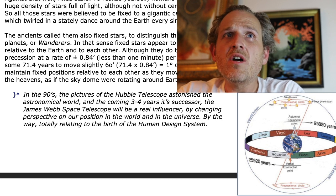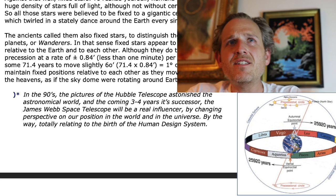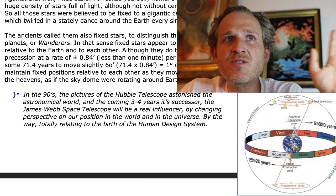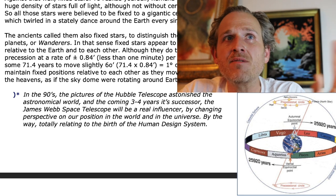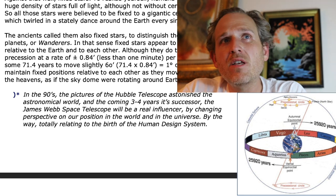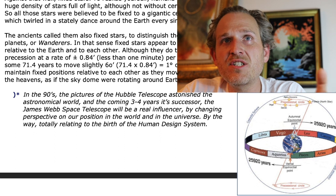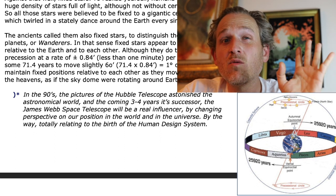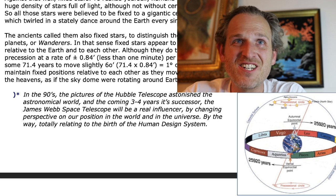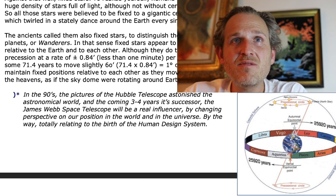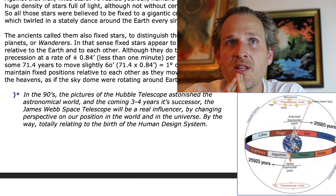All these stars were believed to be fixed to a gigantic celestial sphere, which twirled in a stately dance around the Earth every single day. The ancients called them also fixed stars, to distinguish them from the planets, or wanderers. In that sense, fixed stars appear to be stationary, relative to the Earth and to each other.